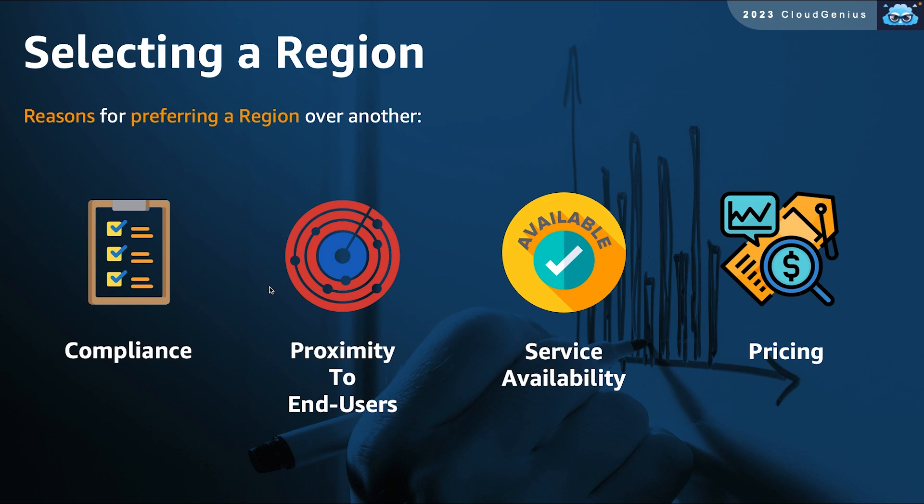Third, service availability. When AWS announces a new service, it does not become available in all regions at once — it takes some time until a service is rolled out to other regions. So, in a customer scenario, you might need to change your mind if the requested service is not yet available in your first region of choice.